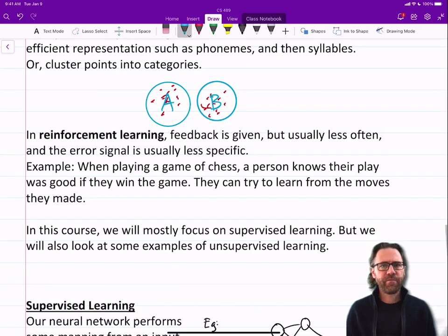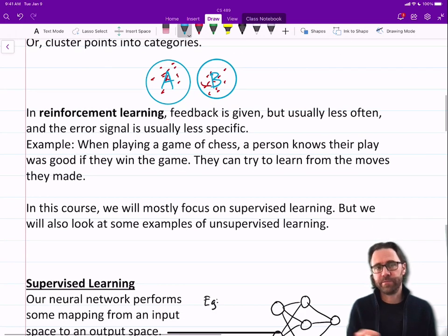Finally, reinforcement learning. In reinforcement learning, feedback is given, but usually less often, and the error signal is usually less specific. In fact, it's really just about giving rewards for different outcomes. And so the idea is the agent chooses actions to try to maximize its reward. But often the reward signal can be quite sparse and not specific to error.